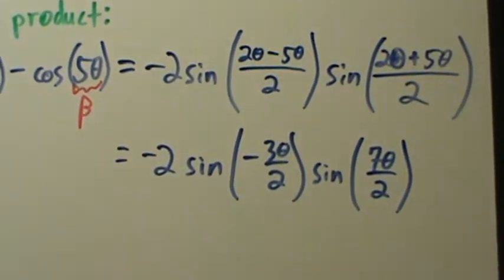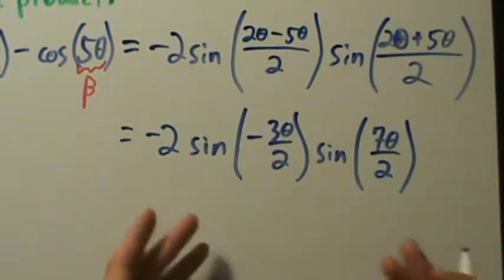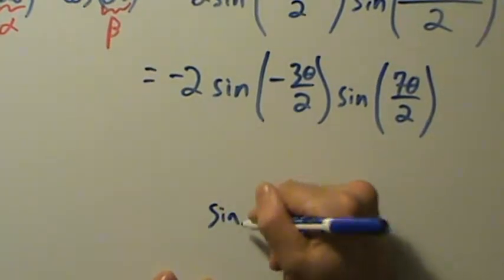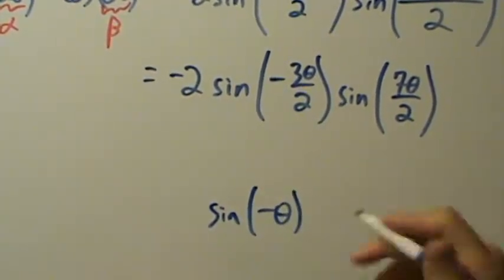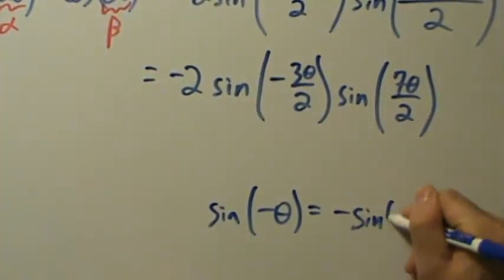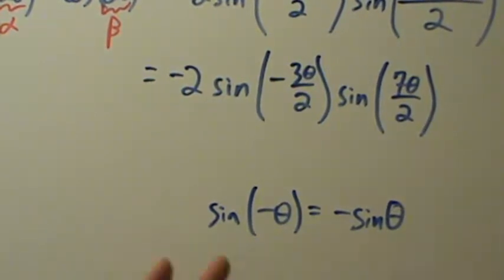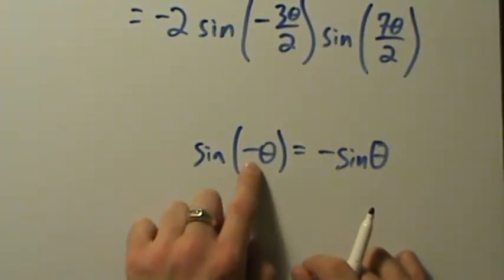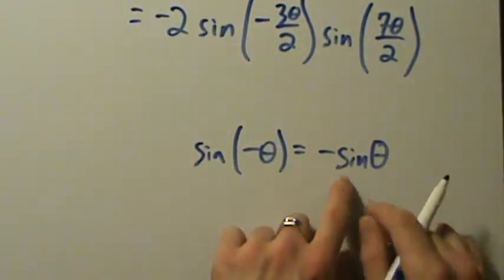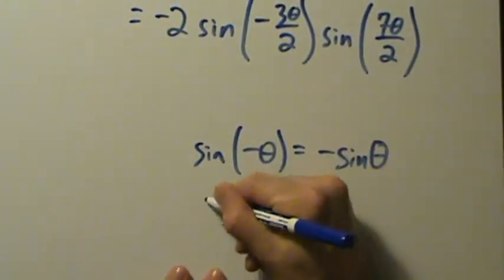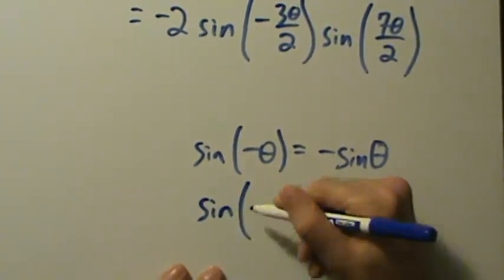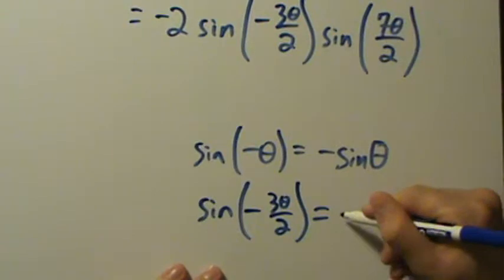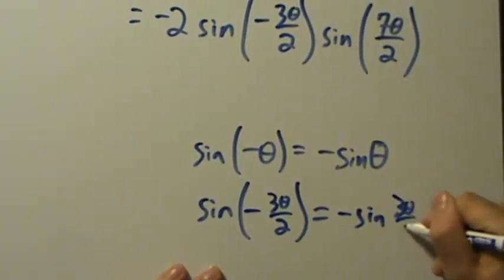There's one more simplification we can do. Remember, sine is an odd function, so sine of negative theta equals negative sine of theta. This is true for anything inside: sine of negative something equals negative sine of that something. Specifically, sine of negative three theta over two equals negative sine of three theta over two.